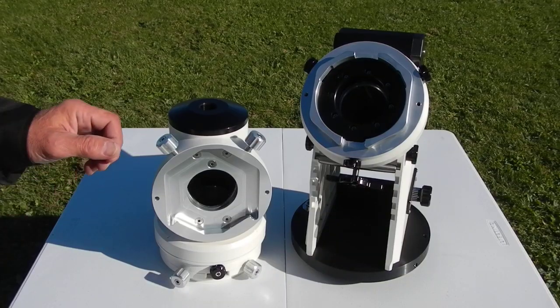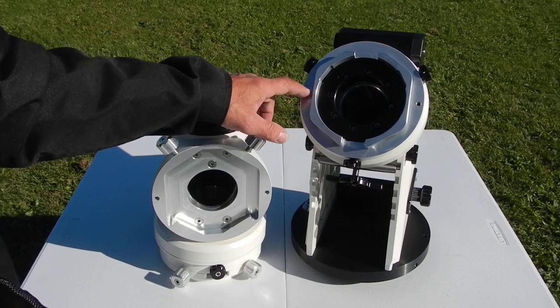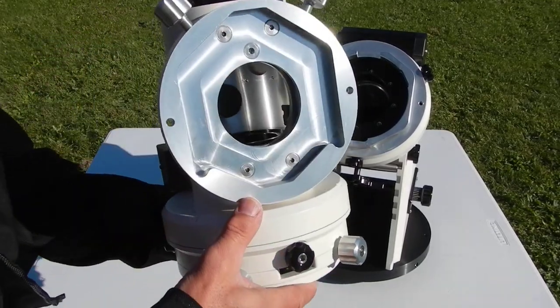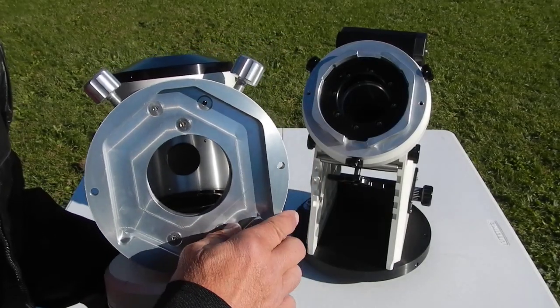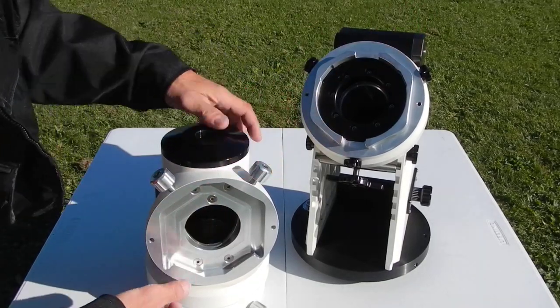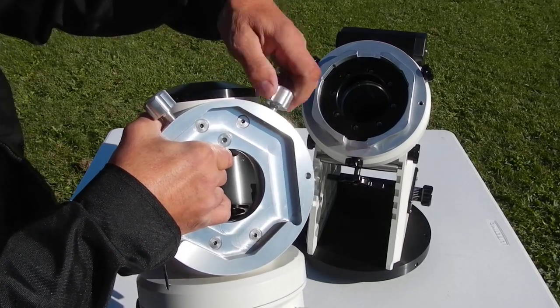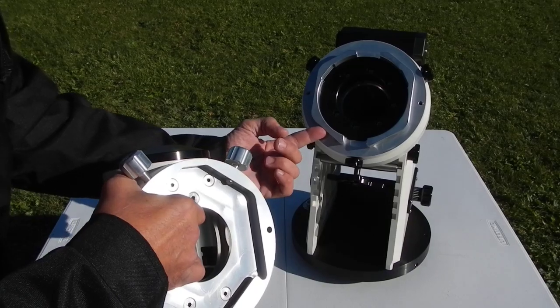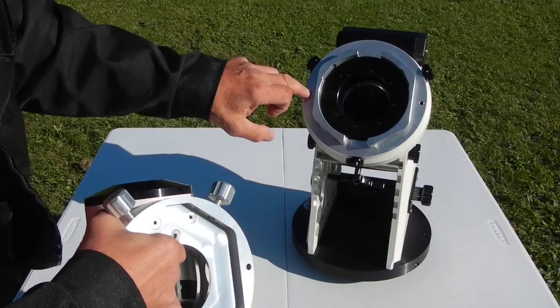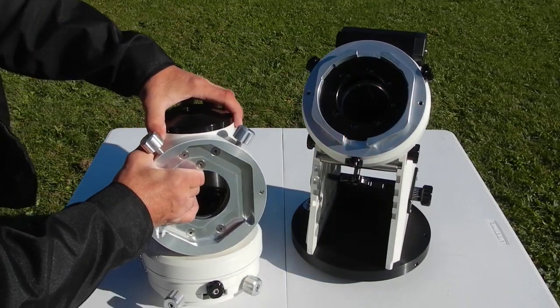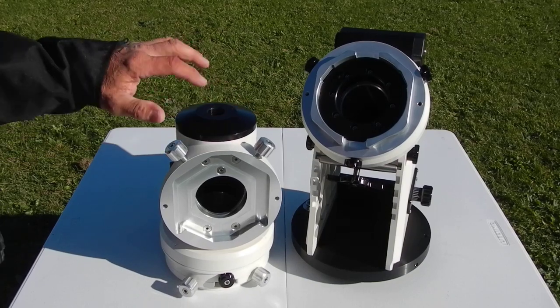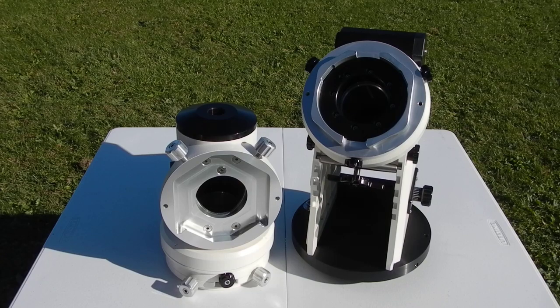Here I have the dec housing separated from the right ascension housing and you can see how they've machined this with this dovetail in here. This sets in here and they tighten this down. Those knobs, those points come up down in here. These holes are where you can put an additional bolt should you want the extra strength for that. Very nicely done. Astrophysics, as anybody knows who has any of their equipment, does a beautiful job of machining. The fit and finish are just impeccable.